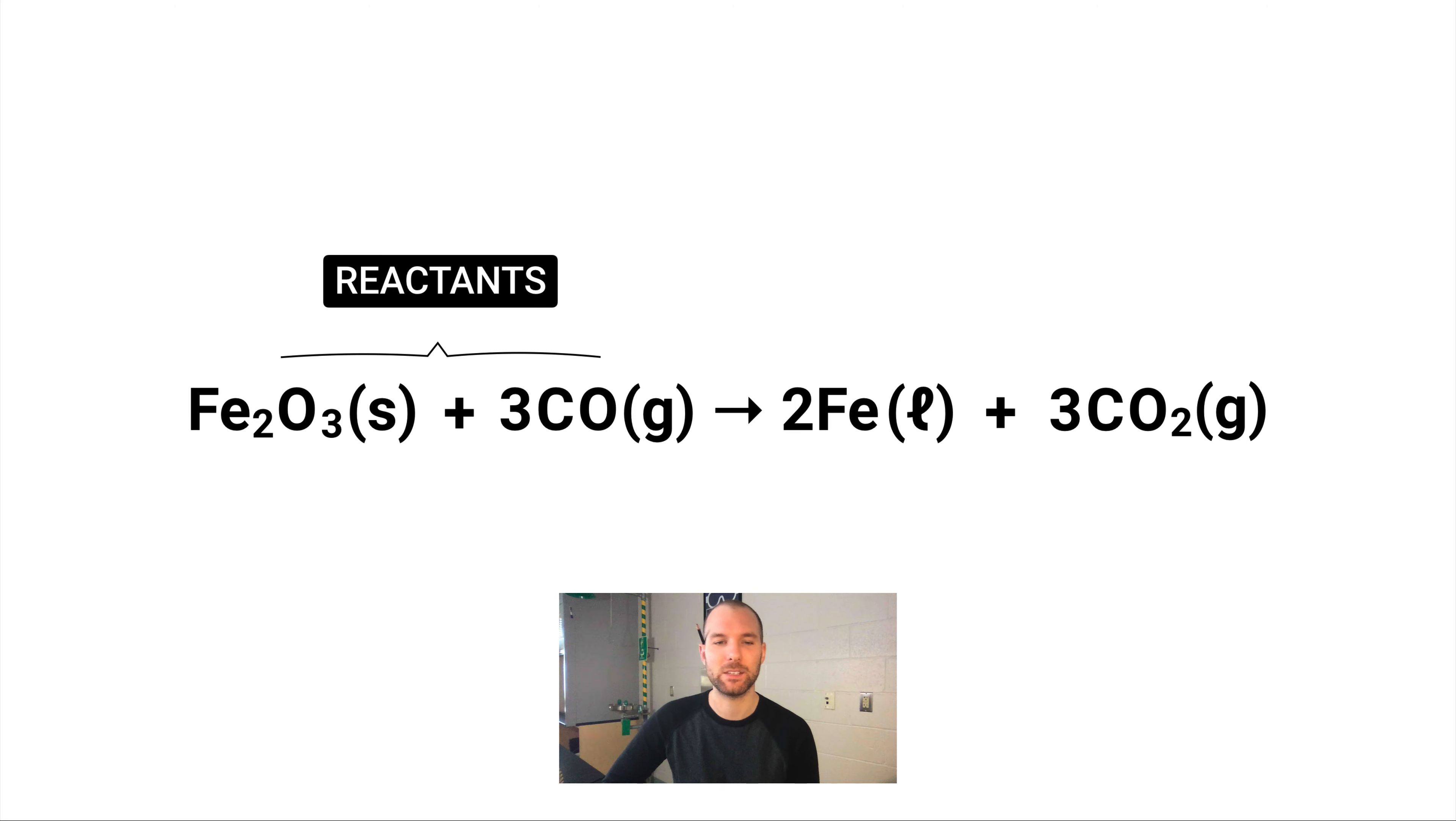The left side is what we call the reactants. Reactants are like the ingredients of a chemical reaction. The left side shows you what exists before the reaction takes place. The right side is called the products, and that's what happens after the reaction has occurred.